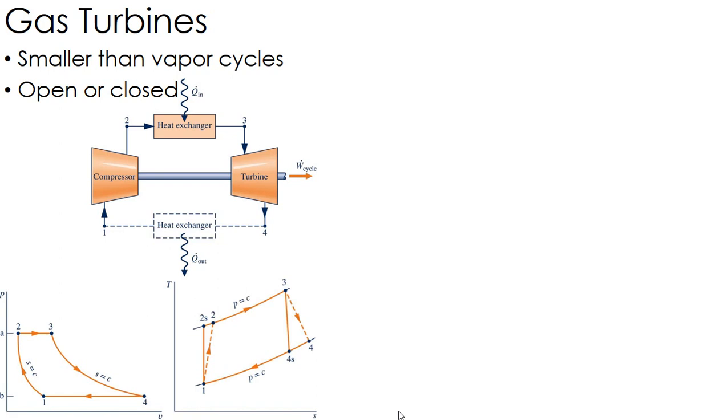I've got the system shown here - PV diagram as well as a TS diagram. Note that the pressure is constant two to three and one to four whether it's open or closed. One to four should have the same pressure, and then ideally the isentropic process one to two and three to four.